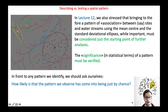After we locate a spatial pattern, we have to always bear in mind that the pattern we discover could have arisen just by chance. In front of any pattern that we may bring to the fore using descriptive statistics, it is crucial to formally verify how likely it is that our pattern is the result of chance alone.